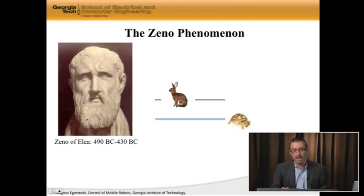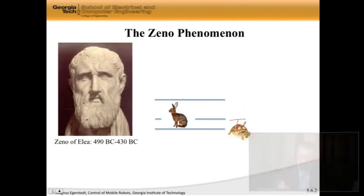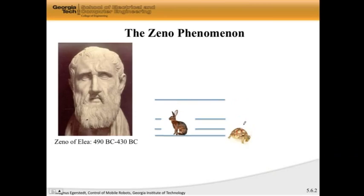And at some point, the hare reaches the point where the tortoise started from. But at that point, the tortoise has moved. Not much, but it has moved a little bit. This is how far the tortoise has moved. Okay, the race goes on. And at some point, the hare catches up to where the tortoise was last time. But now, the tortoise has moved a little bit more. Not much. And then this repeats.